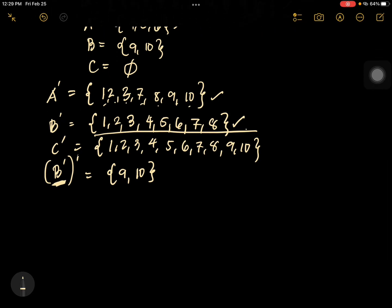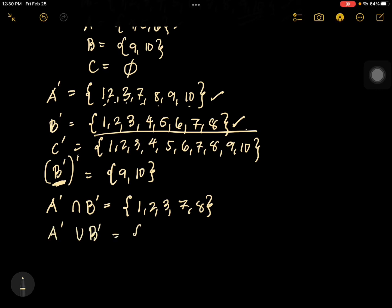Let's try to combine what you've learned in the previous lesson. What is A complement intersection B complement? A complement is {1,2,3,7,8,9,10} and B complement is {1,2,3,4,5,6,7,8}. The intersection is the common elements, which gives {1, 2, 3, 7, 8}. You can really combine operations. How about A complement union B complement? We combine all elements from both complements, so the answer is {1, 2, 3, 7, 8, 9, 10}. That's example number 2.